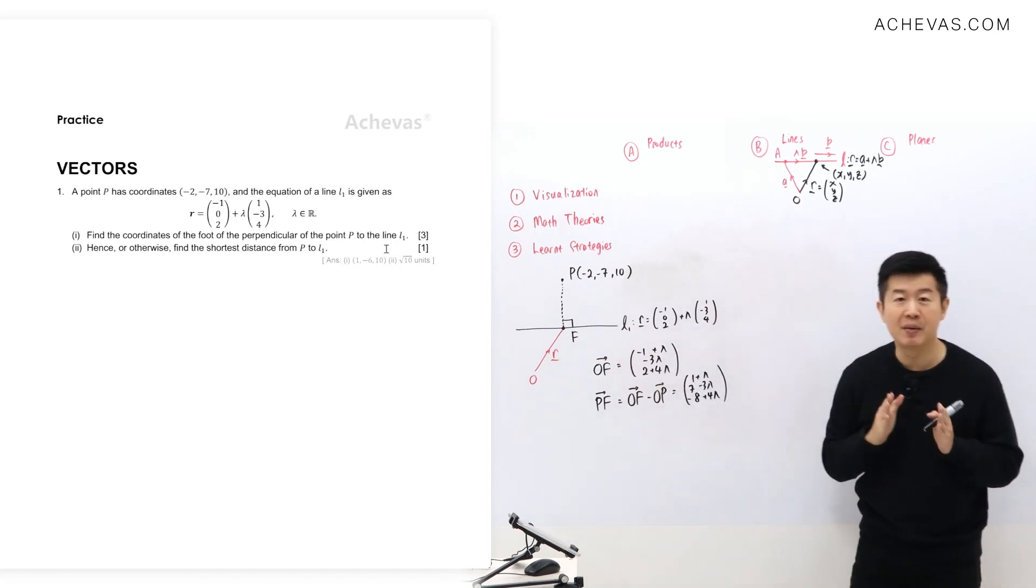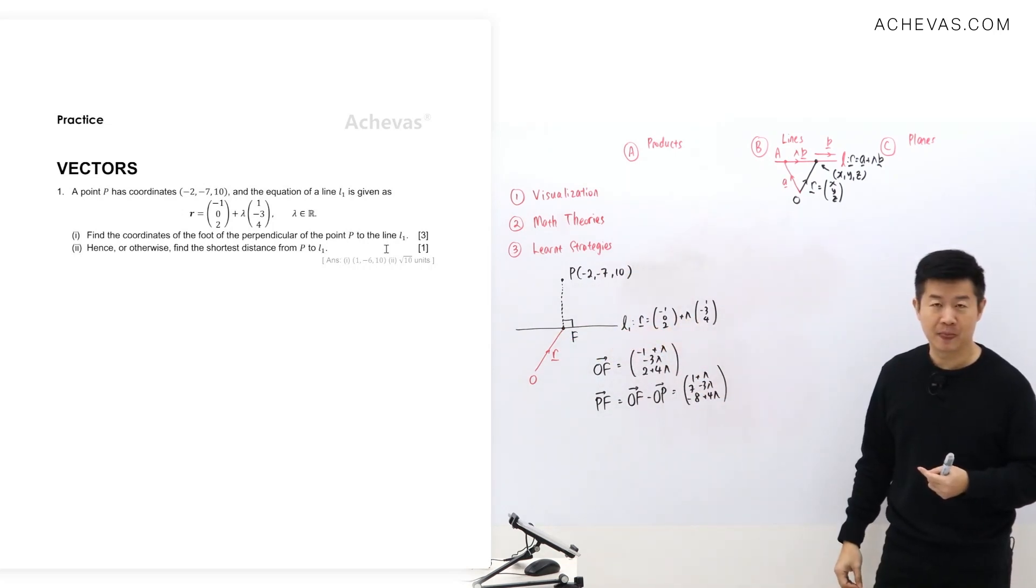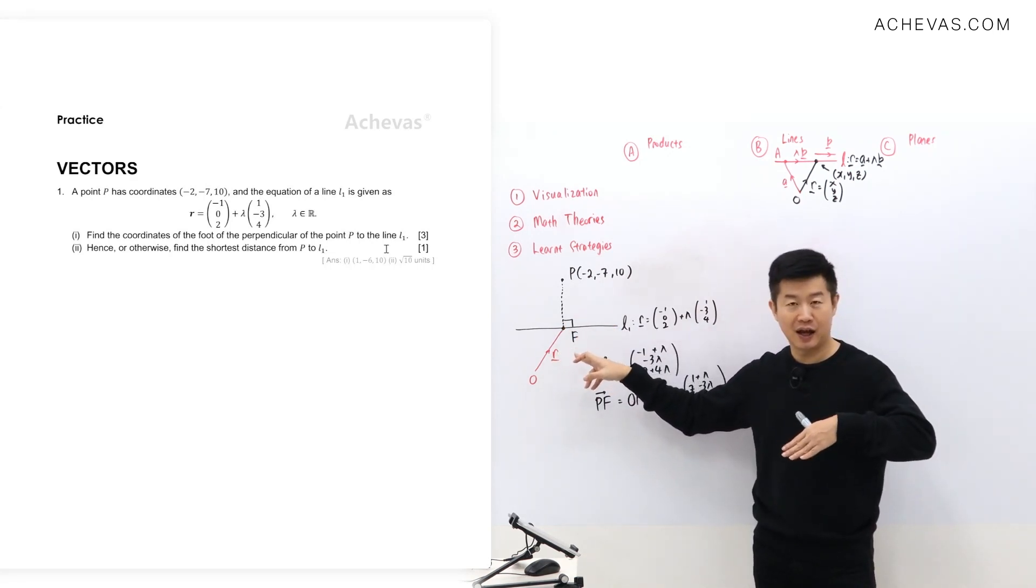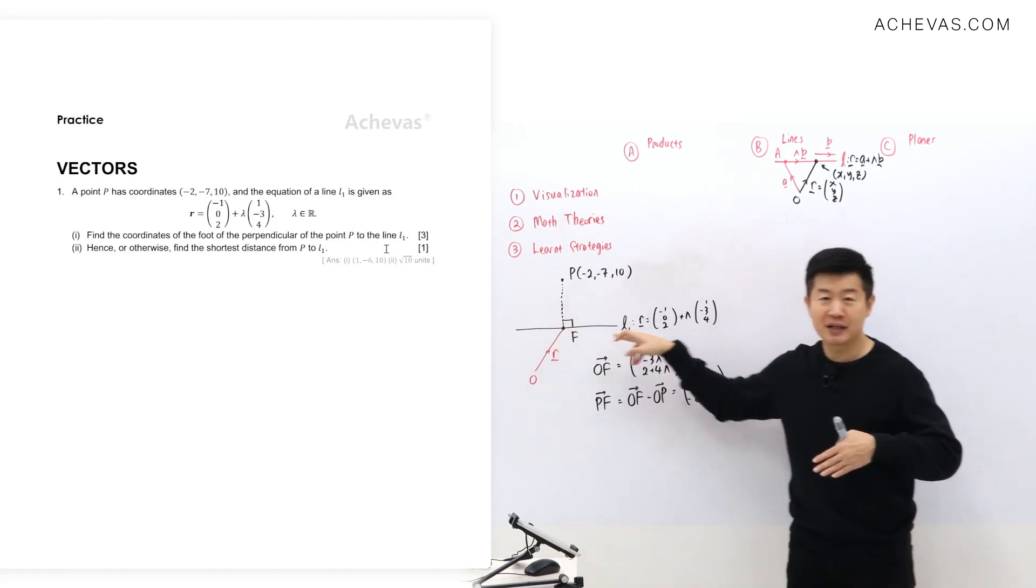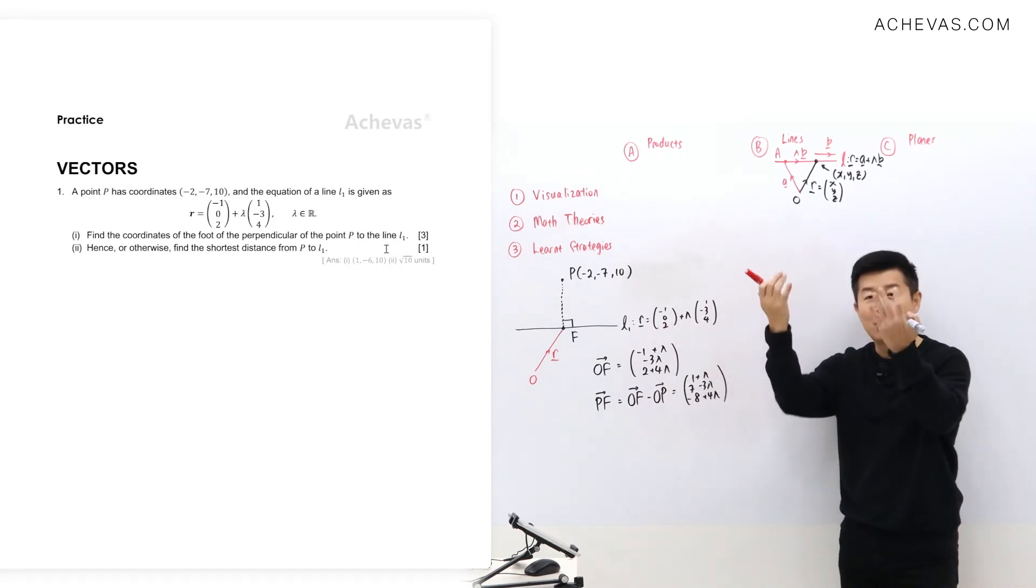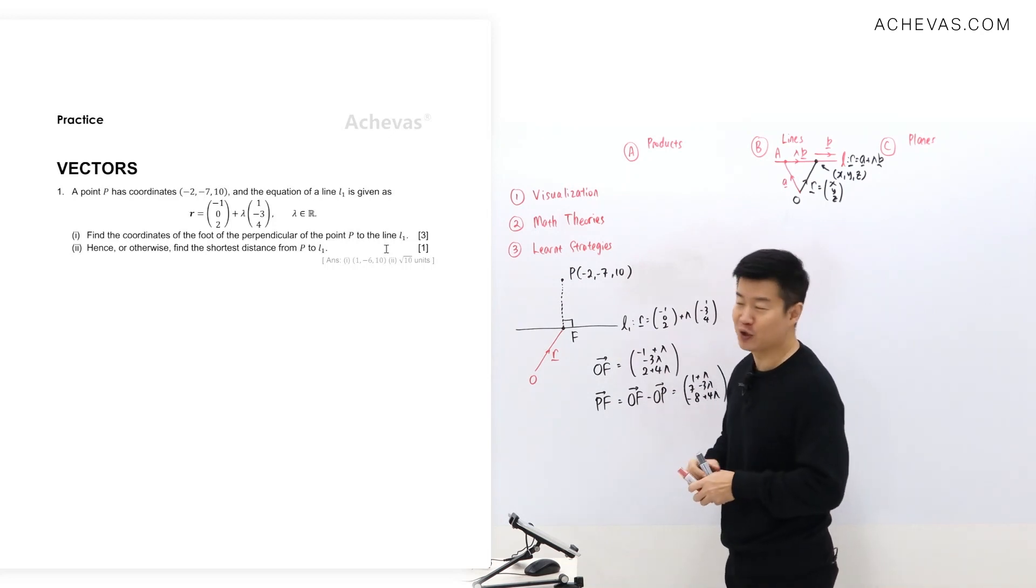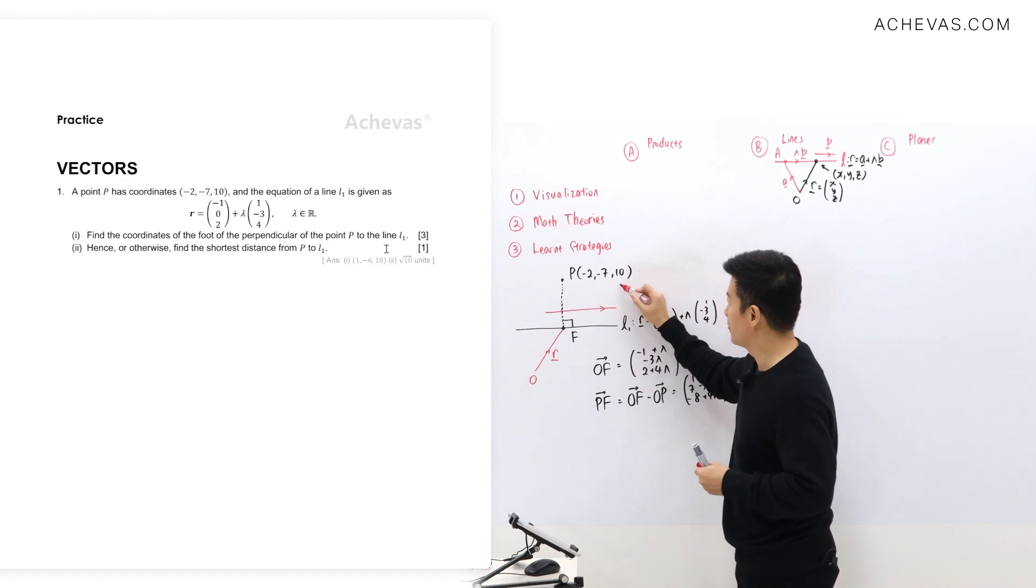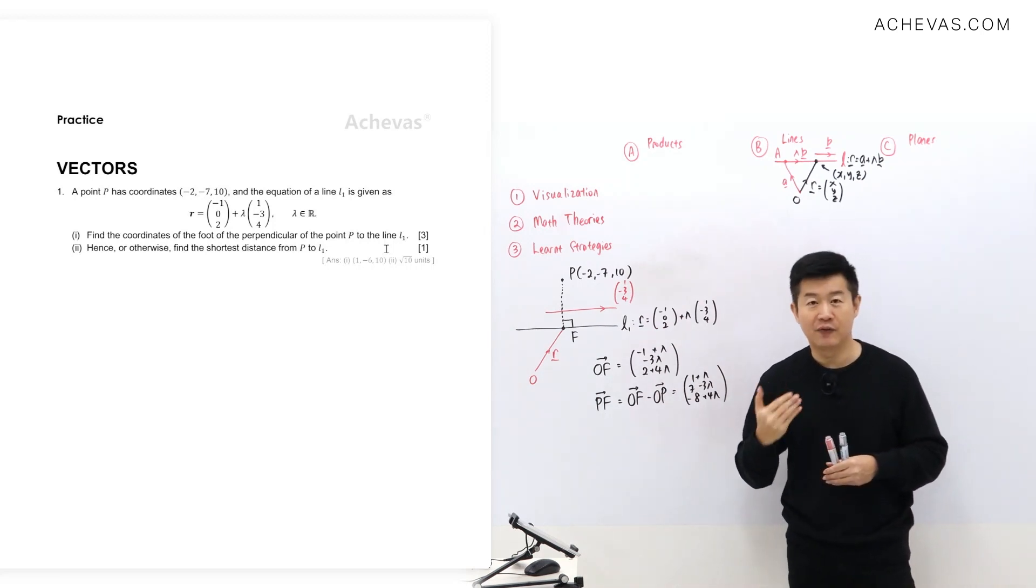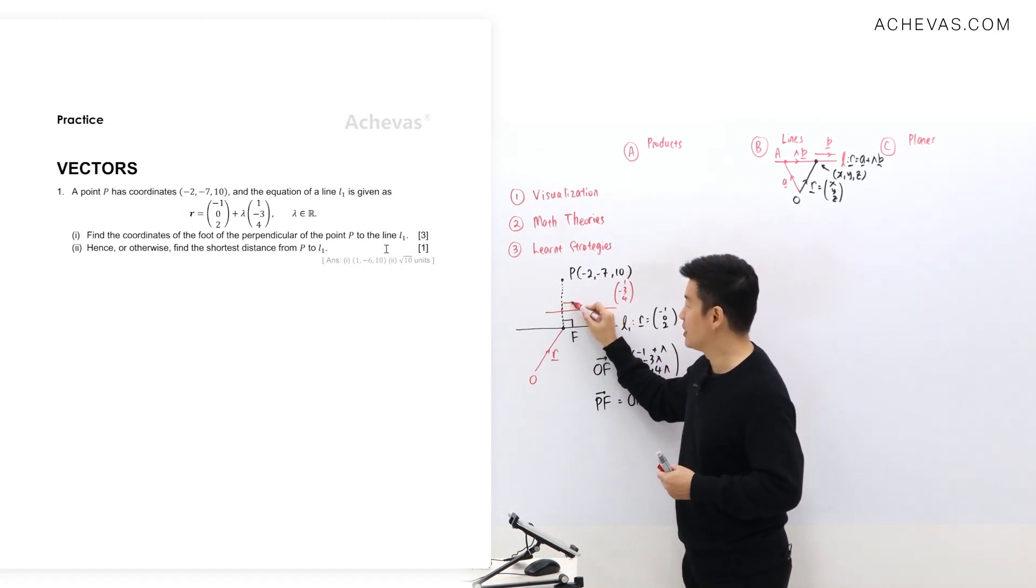And PF is perpendicular, geometrically. This depends on my visualization. PF is perpendicular to the line L1. Can I use this? I cannot use this, because this is the position vector of a point that is on the line L1. This is not perpendicular to this, this is perpendicular to the line L1. So from the information, from the equation that is given, I will extract out information that gives us insight to the geometry of the line L1. And I believe, and I'm very sure you guys believe this too, it is going to be this, 1 minus 3, 4. Because 1 minus 3, 4 is the vector that is parallel to the line L1.